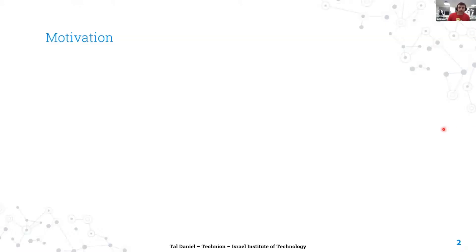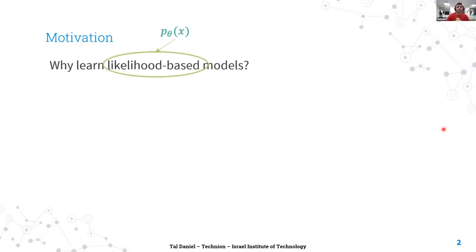Before we begin, I want to give some motivation for why we want better likelihood-based models, and more specifically, why building stronger variational autoencoders — which are one type of this family of models — is desired. Likelihood-based models allow us to learn useful, possibly compact representations of the data, and these representations can be used for many other downstream tasks.